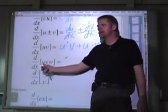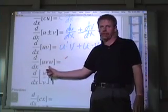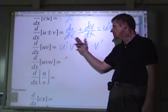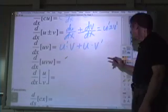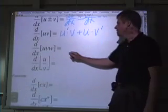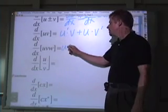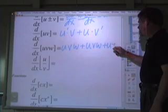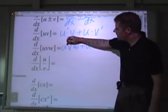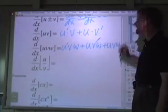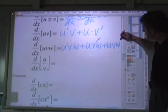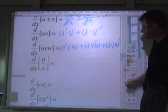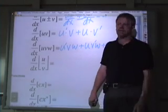Let's see how that applies when there are three factors in the product. Instead of writing the factors down twice, when you have three factors uvw, write down the product three times: uvw plus uvw plus uvw. In the first term put the derivative on the first factor, in the second term put the derivative on the second factor, and in the third term put the derivative on the third factor. That is the product rule applied when there are three factors in the product.